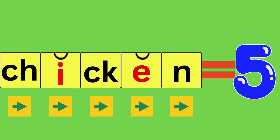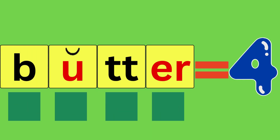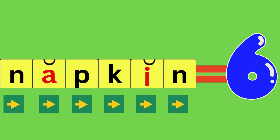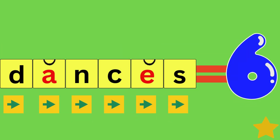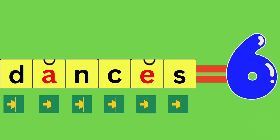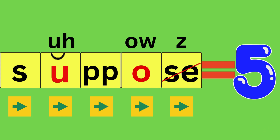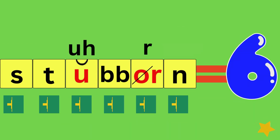Chicken, Ch-I-C-I-N, chicken — how many sounds did you hear? Five. Butter, B-U-T-R, butter — how many sounds did you hear? Four. Napkin, N-A-P-C-I-N, napkin — how many sounds did you hear? Six. Hoping, H-O-P-I-N, hoping — how many sounds did you hear? Five. Dances, D-A-N-S-E-S, dances — how many sounds did you hear? Six. Dropped, D-R-A-P-T, dropped — how many sounds did you hear? Five. Suppose, S-U-P-O-Z, suppose — how many sounds did you hear? Five. Stubborn, S-T-U-B-R-N, stubborn — how many sounds did you hear? Six.